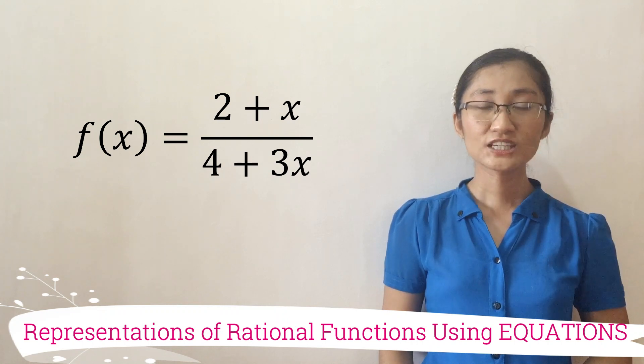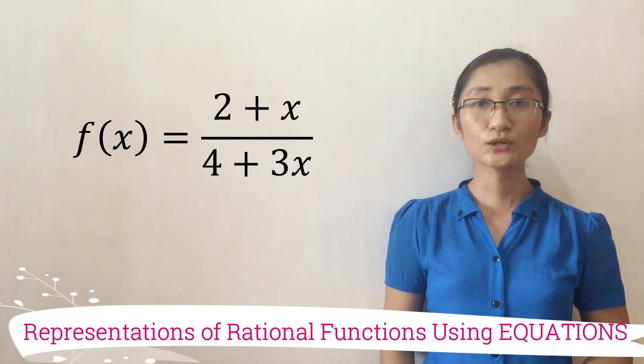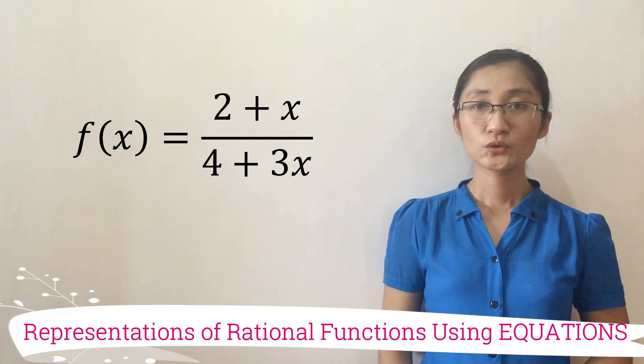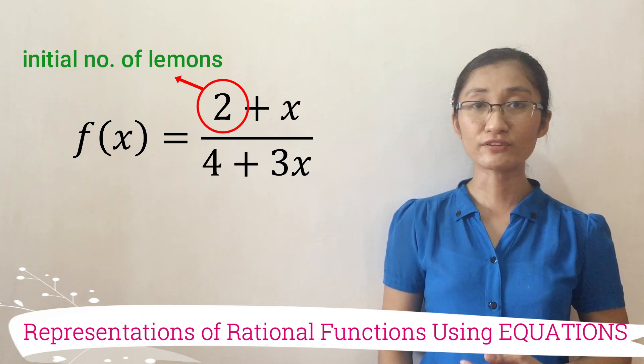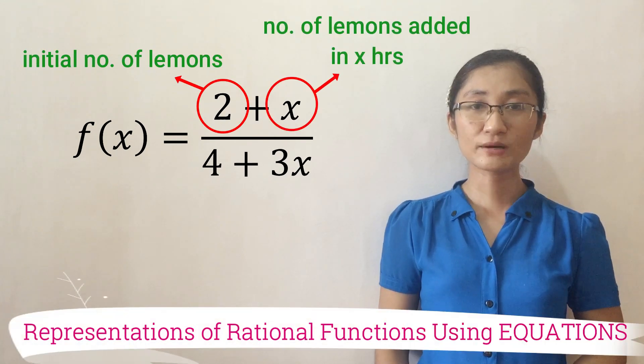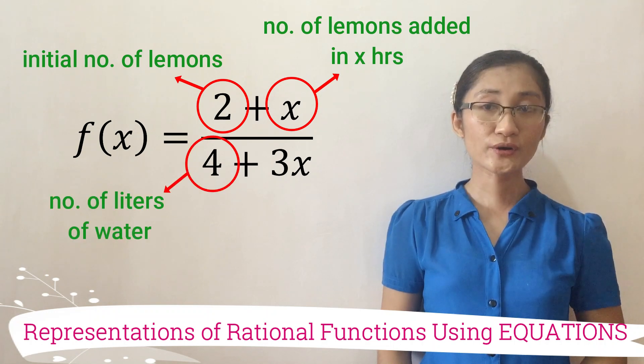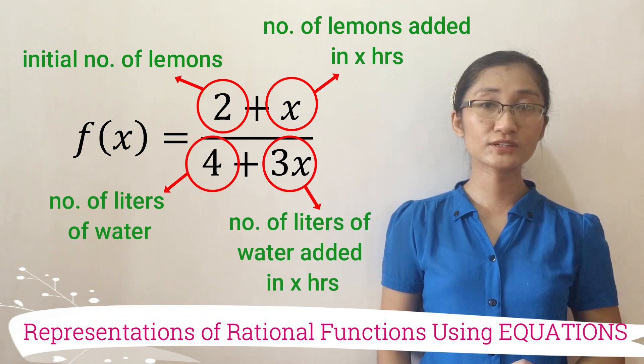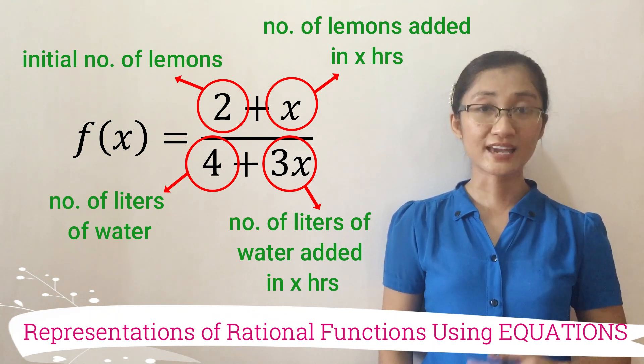That is, f of x equals 2 plus x all over 4 plus 3x, where 2 is the initial number of lemons, x is the number of lemons added in x hours, 4 is the number of liters of water, and 3x is the number of liters of water added in x hours.